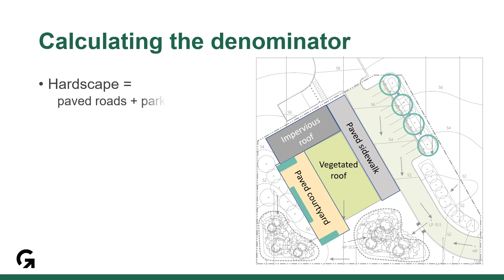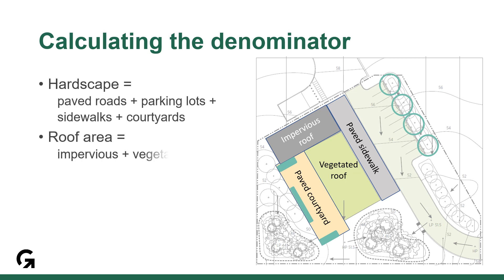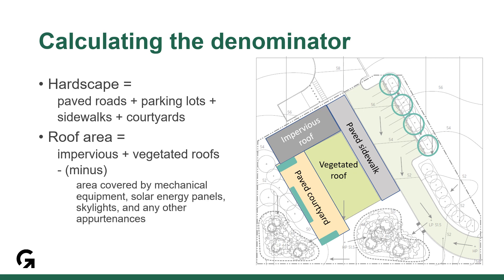How do we as reviewers confirm the denominator? In your LEED project site plan, consider all the hard surfaces on your site, including the parking lots, pathways, courtyards, and the complete roof, except for the mechanical equipment.